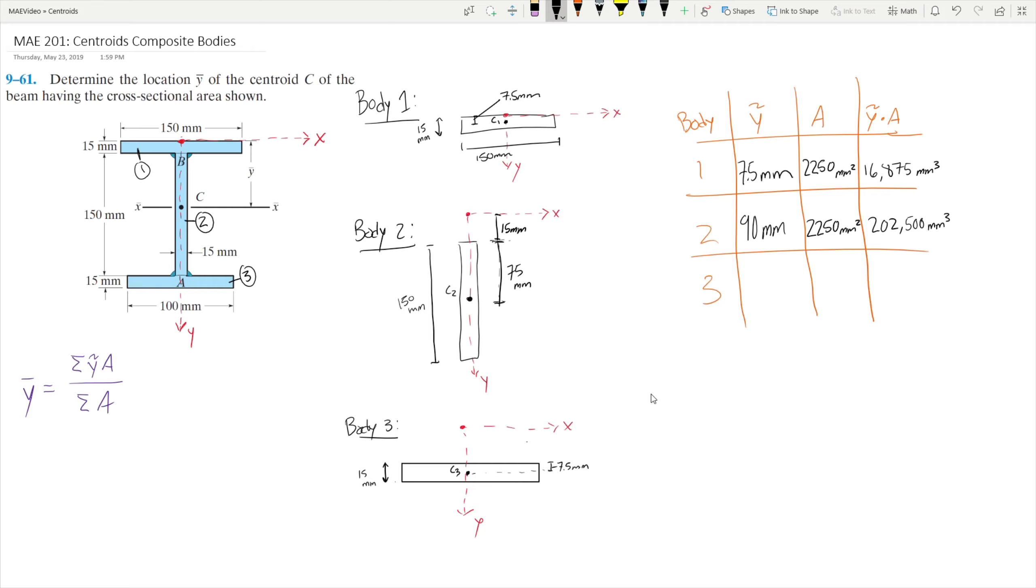Now, similar to body 2, we need to find the distance from the top of the body to the x-axis. Looking at our diagram here, we can see that it is going to be 15mm plus 150mm. So that distance is going to be 165mm. That means that our y-tilde for body 3 is going to be 165 plus 7.5mm, meaning that it's going to be 172.5mm.